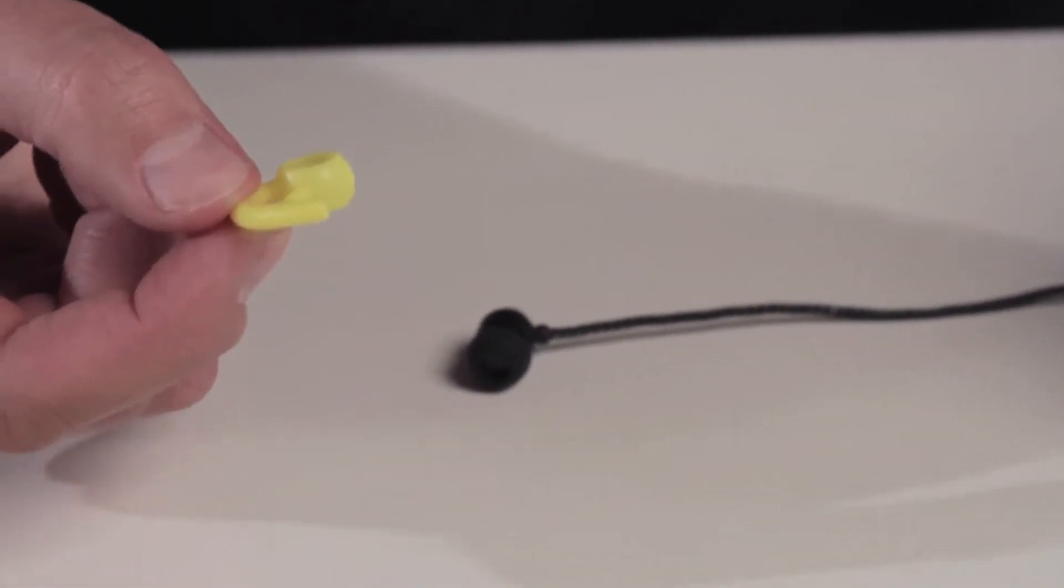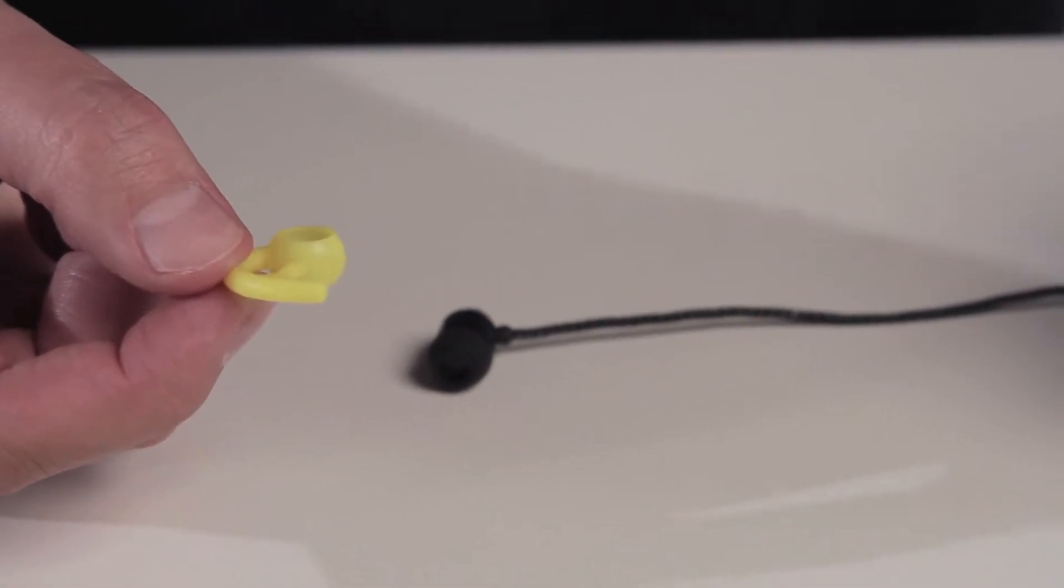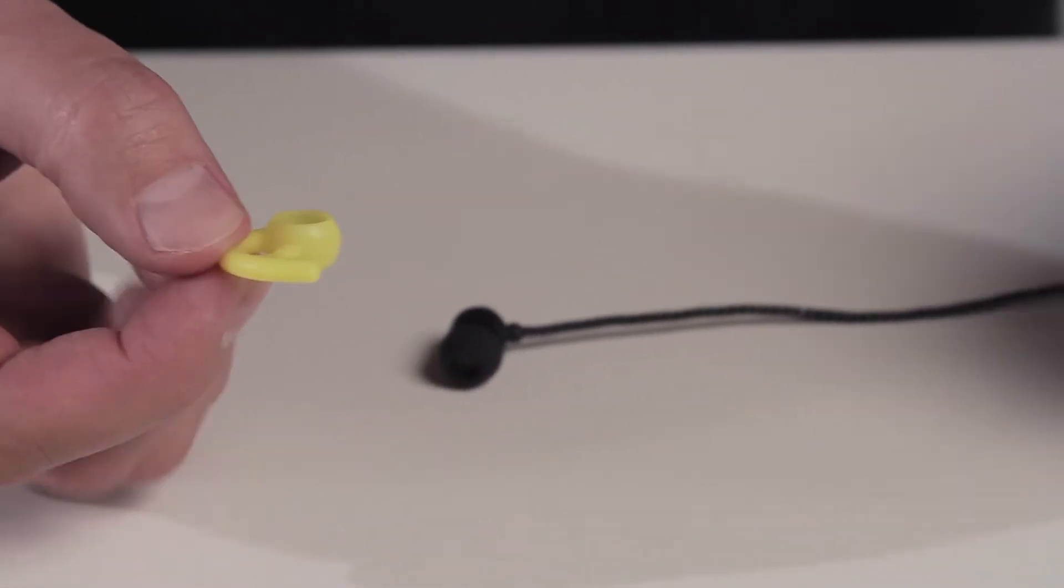If you're going to set it up for the right ear, hold the wing so that the curve is on the right hand side. I'm going to set this one up for the right hand side.